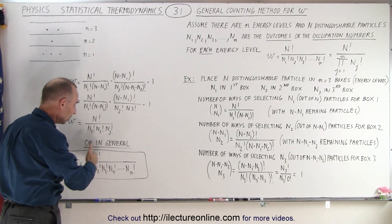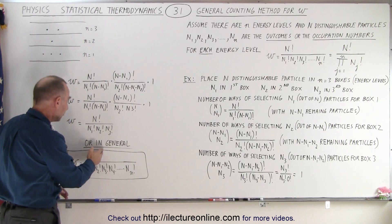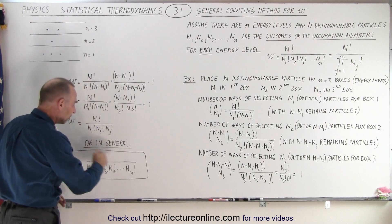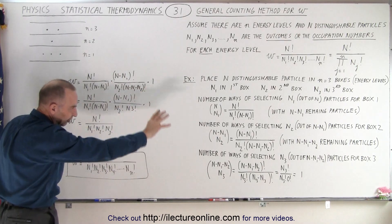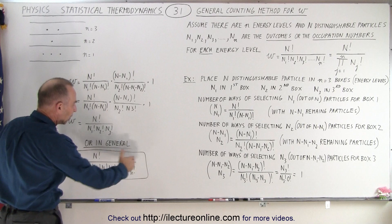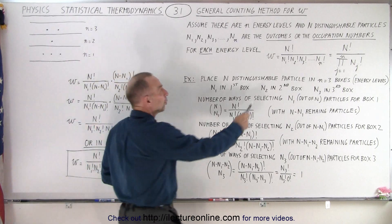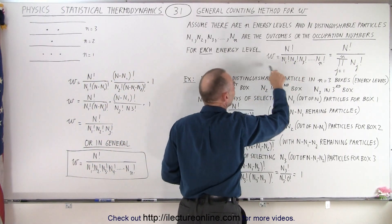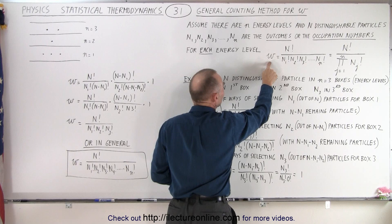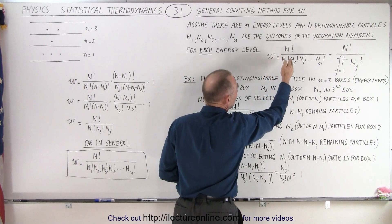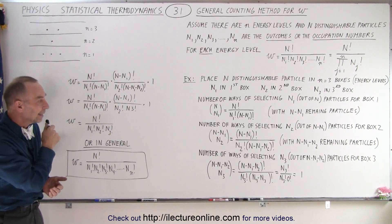How do we expand that in general? It's easy to see that if there's a fourth, fifth, or sixth box, we simply add another factor in the denominator. We end up with N factorial in the numerator, and however many boxes or energy levels there are — n1 factorial, n2 factorial, n3 factorial, n4 factorial — we just keep going. That is the general equation for the total number of microstates for each of the energy levels or boxes, and that is how it's done.